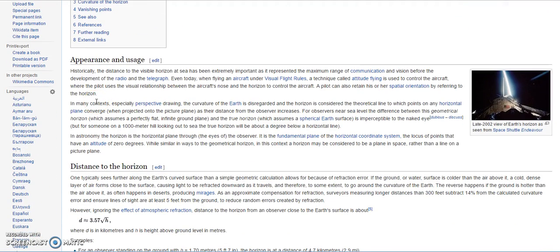Now there is a paragraph here which is kind of revealing. I know it's Wikipedia and it is edited, but it pretty much tells the story here. It says in many contexts, especially perspective drawing, the curvature of the earth is disregarded and the horizon is considered the theoretical line to which points on any horizontal plane converge when projected onto the picture plane as their distance from the observer increases. So they're basically saying, because I'm an artist and when we draw things with perspective we know in mind that it is continually horizontal even though we can't see it. This is understood. This is a fact when you're drawing landscapes, especially anything outside.